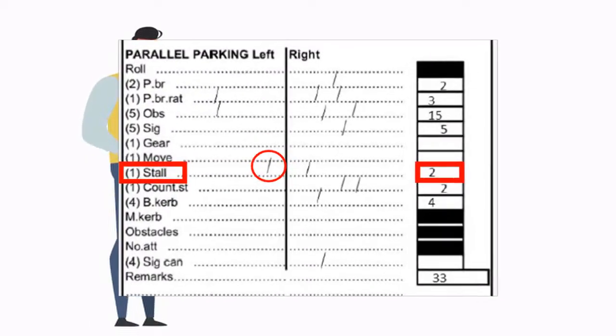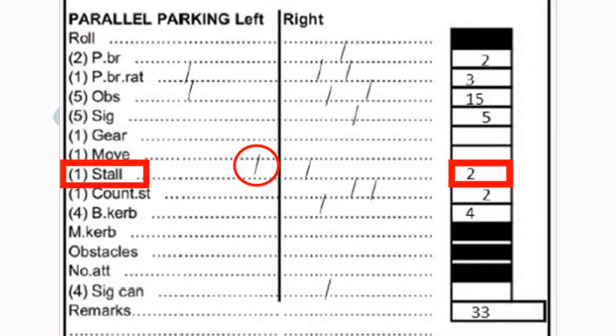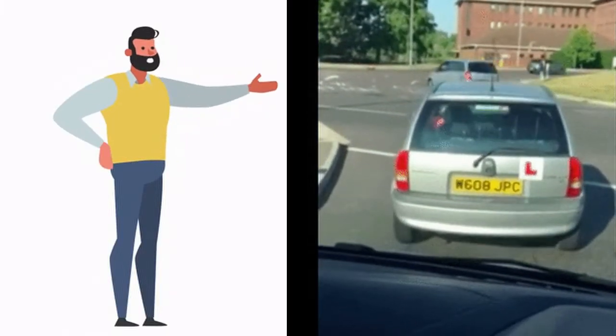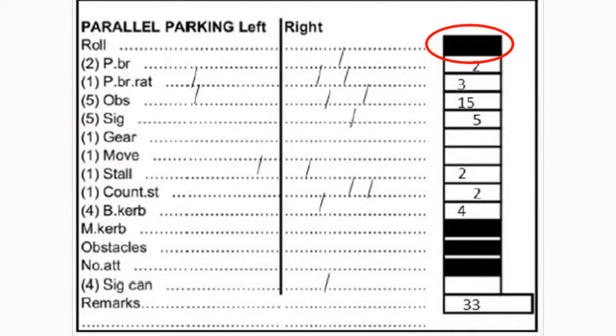Next, the student got two points scored for stalling the engine twice. In a case where you stall the engine and the car rolls, the test will be stopped. The examiner will draw a circle around the black rectangle indicating a fail.